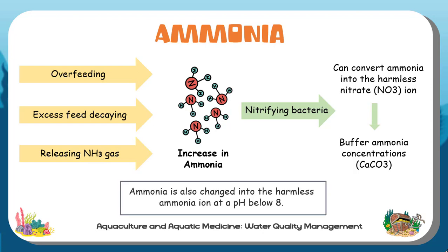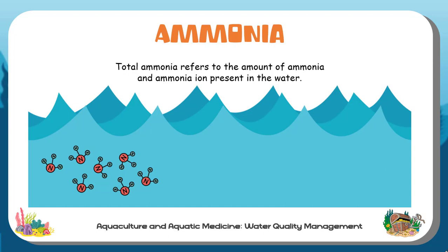Ammonia is also changed into the harmless ammonium ion at a pH below 8, as long as pH is 8 or lower. Ammonia levels of up to 0.5 ppm will be safe. The total ammonia refers to the amount of ammonia and ammonium ion present in the water.